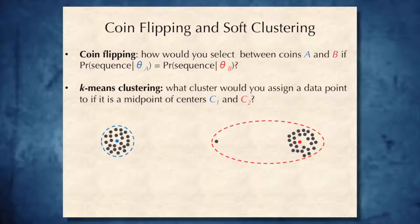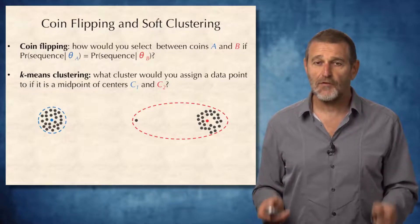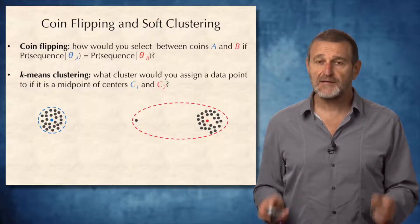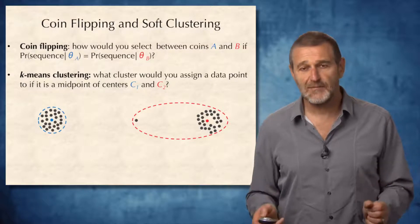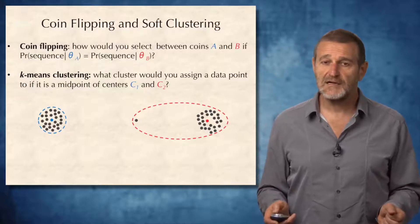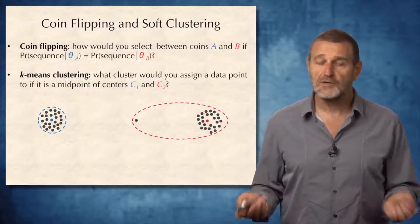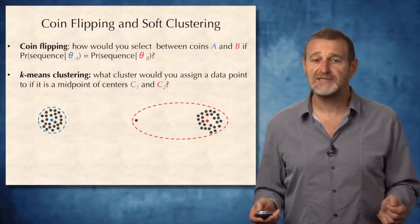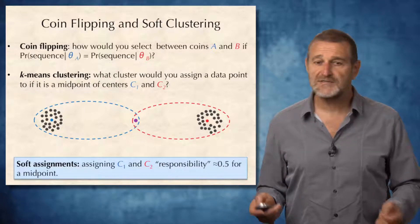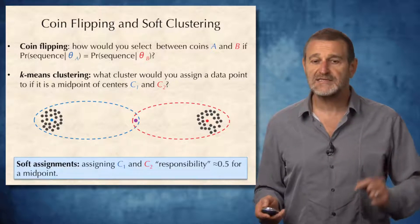Please note that there is one question that remains unaddressed for both coin flipping and k-means clustering. In coin flipping, we have not discussed yet what to do if the probability of a sequence being generated by the blue coin is exactly the same as the probability of the sequence being generated by the green coin. And likewise, in k-means clustering, we have not discussed how to assign a midpoint to two clusters that a point is equidistant to. In hard assignments, we have no choice but to make a decision, either blue or red in this case.